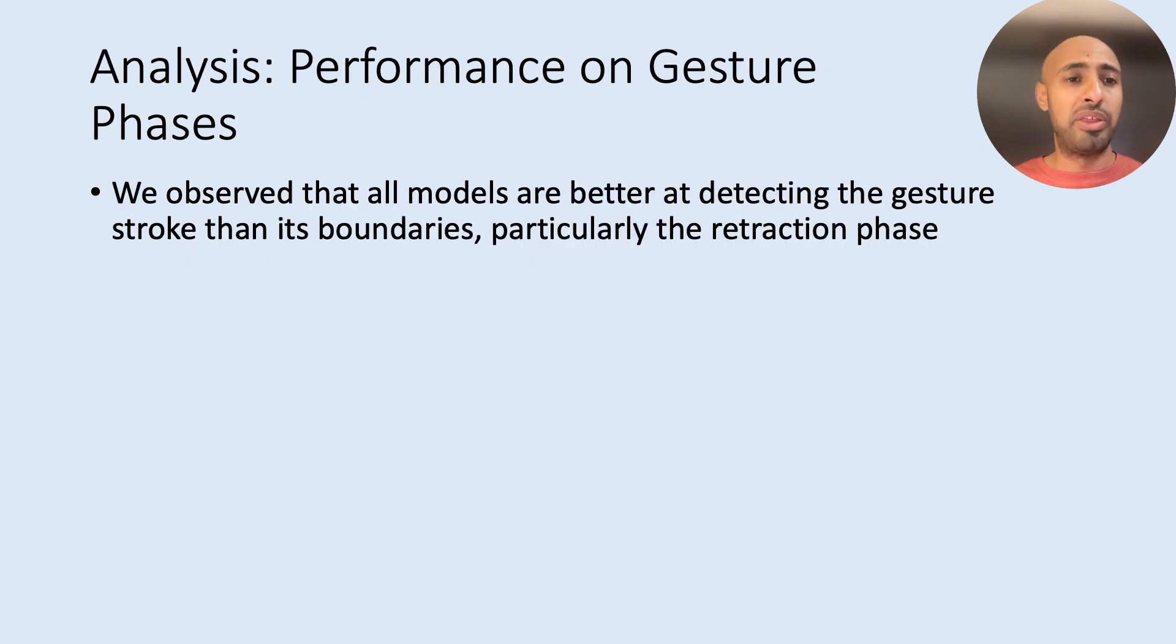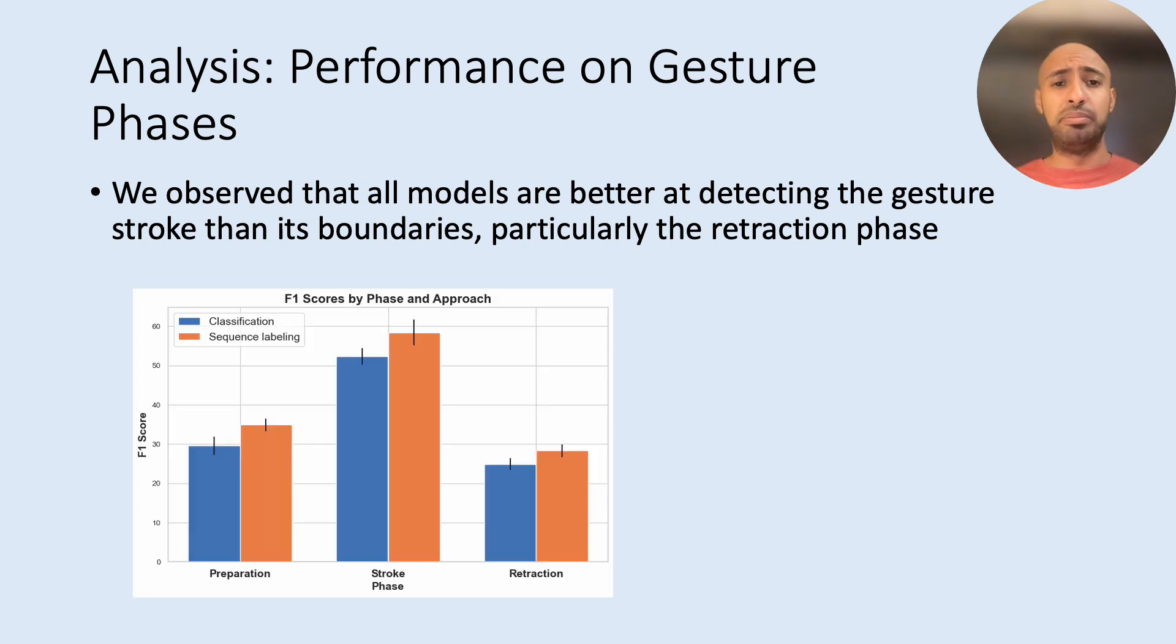We also look at the results of these models across different phases. We notice that the model performs better in gesture stroke detection than boundary phases, especially for the retraction phase. But including these phases in the modeling approach helps in gesture stroke detection.